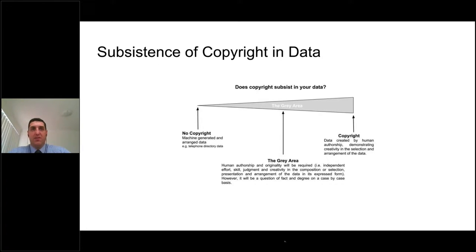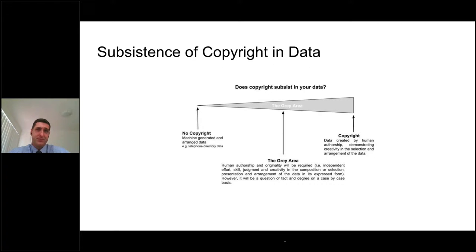At the full opposite end of the scale, you have for example a book created by human authorship demonstrating creativity - in the content, or in the selection or arrangement of the content. Data of that type may well have copyright subsisting in it, and that position is now fairly consistent around the world. The difficulty is the gray area, because whether copyright subsists in data or not is often a question of fact and degree. Between those two polar opposites, a number of interventions by humans may or may not cause material to become copyright-protected.